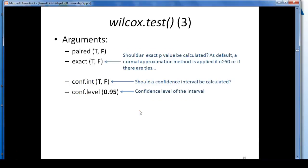Of course, there are also a few extra arguments to the wilcox.test command. The first one is paired, letting you make a paired test as well, but as default it's an unpaired test, because paired is false.